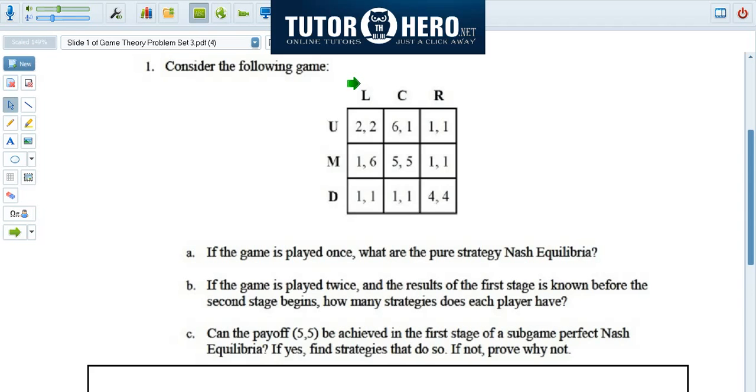If the column player plays left, what are the payoffs to the row player? Well, first off, we should explain the payoffs. In most classes, you would have already seen this. The payoffs are written so that the row player's payoff is on the left, and the column player's payoff is on the right.